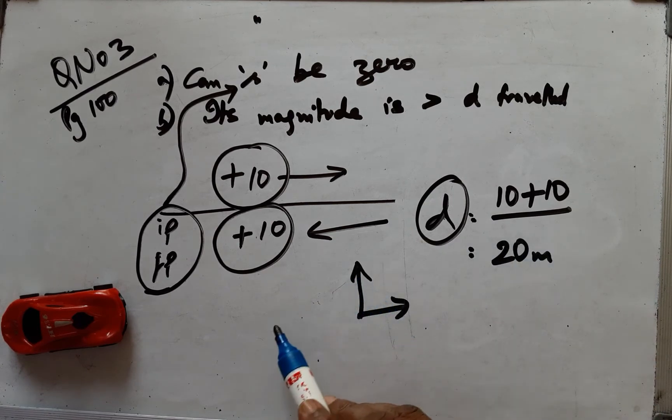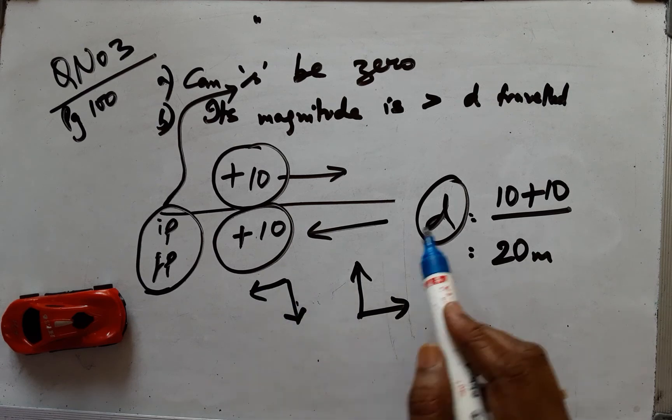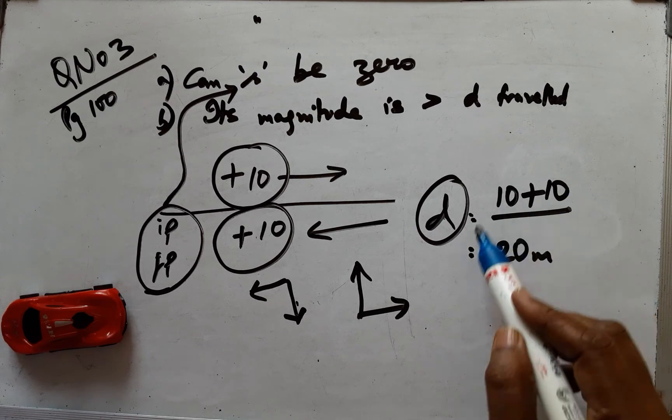No more sign convention. For distance, any direction you go is always plus. For any direction you travel, it is only addition of the magnitudes.